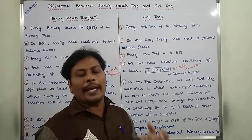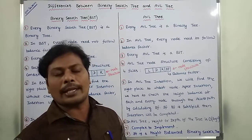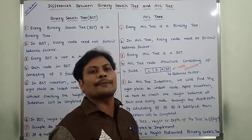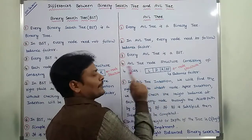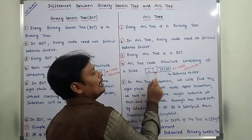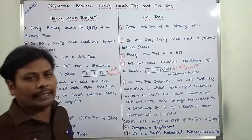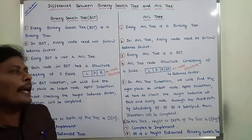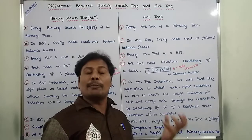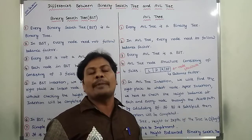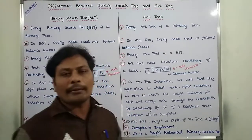Whereas in the case of AVL tree, every node has a structure with four fields: left subtree field, data field, right subtree field, and the fourth one is the balance factor. Each and every node has a balance factor in the AVL tree, defined as the difference between the height of the left subtree minus the height of the right subtree.